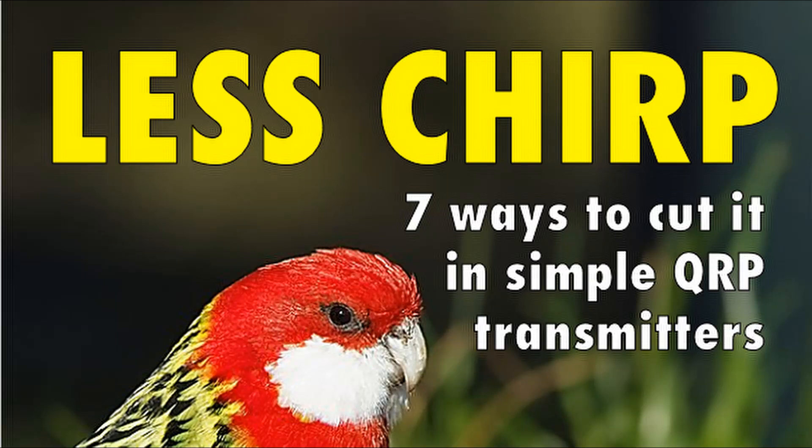One sign that you're listening to a homebrew or vintage CW transmitter on the air is that the signal chirps. What is chirp? It's frequency pulling or shift as you key the transmitter. Each individual character has a distinctive chirping note as you can hear.